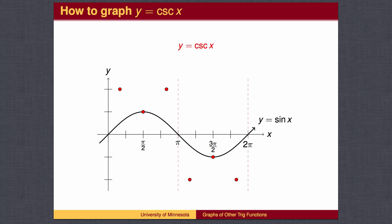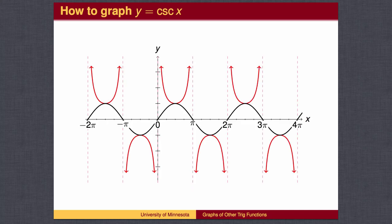The sine is negative 1 half at 7 pi over 6 and 11 pi over 6, so the cosecant is negative 2 at those inputs. We can then sketch the cosecant graph from 0 to 2 pi. Since the sine graph repeats every 2 pi, so does the cosecant graph.